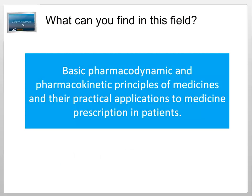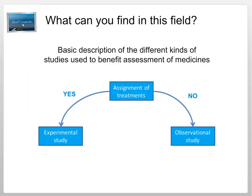What can you find in this field? It focuses on the basic pharmacodynamic and pharmacogenetic principles of medicines and their application to clinical practice and clinical prescription for patients. It also includes a basic description of the different kinds of studies used for benefit assessment of medicines — the observational studies and experimental ones.